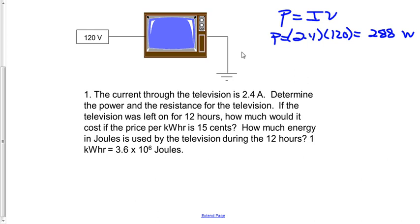And then we'll just use Ohm's law to get the resistance, so V equals IR. We have 120 volts and the current of 2.4 amps, and the resistance turns out to be 50 ohms.